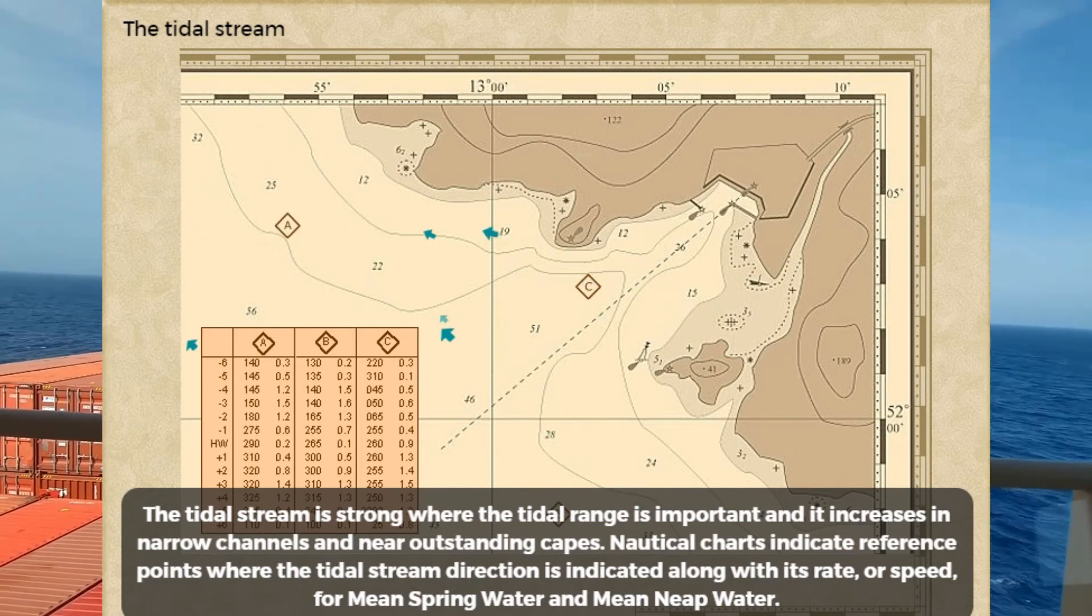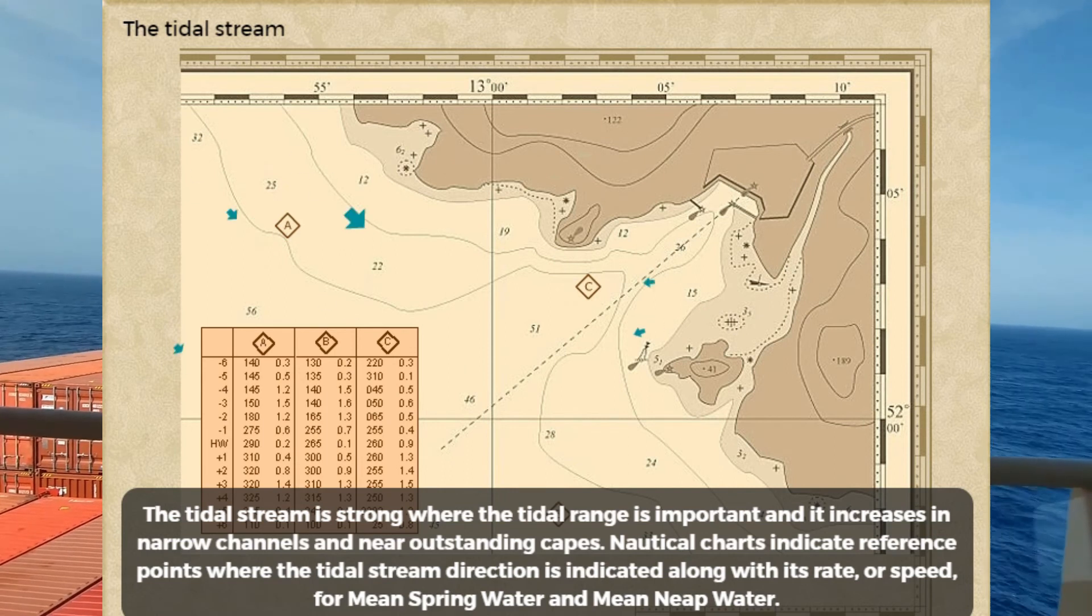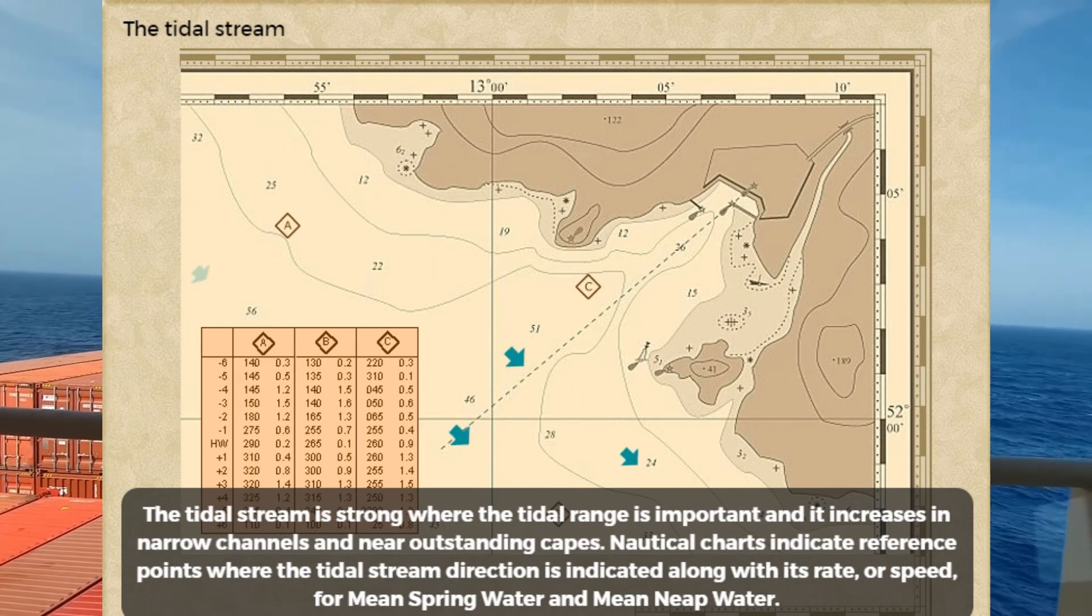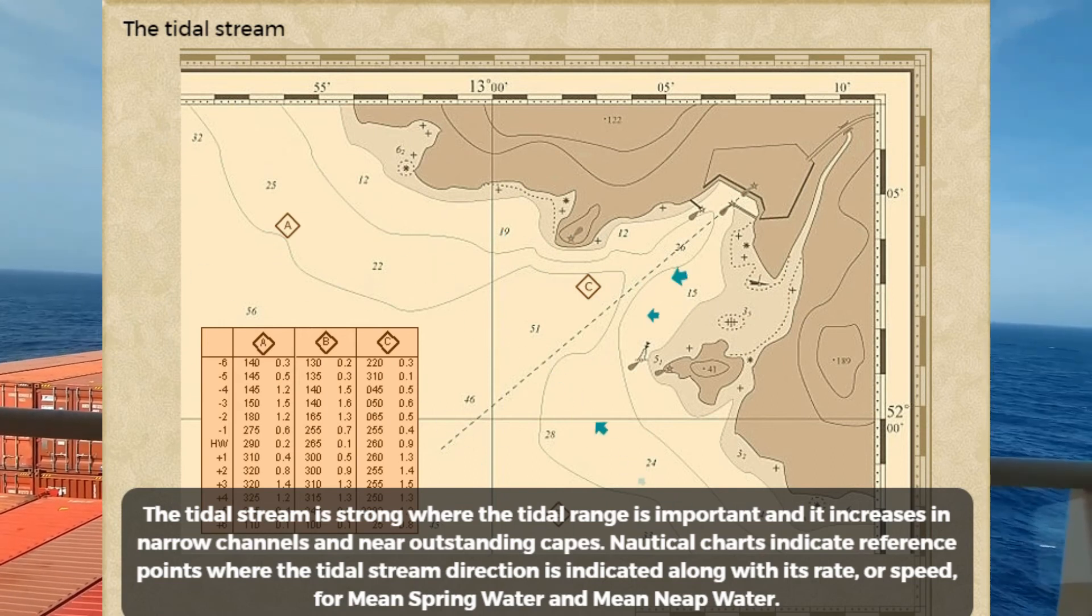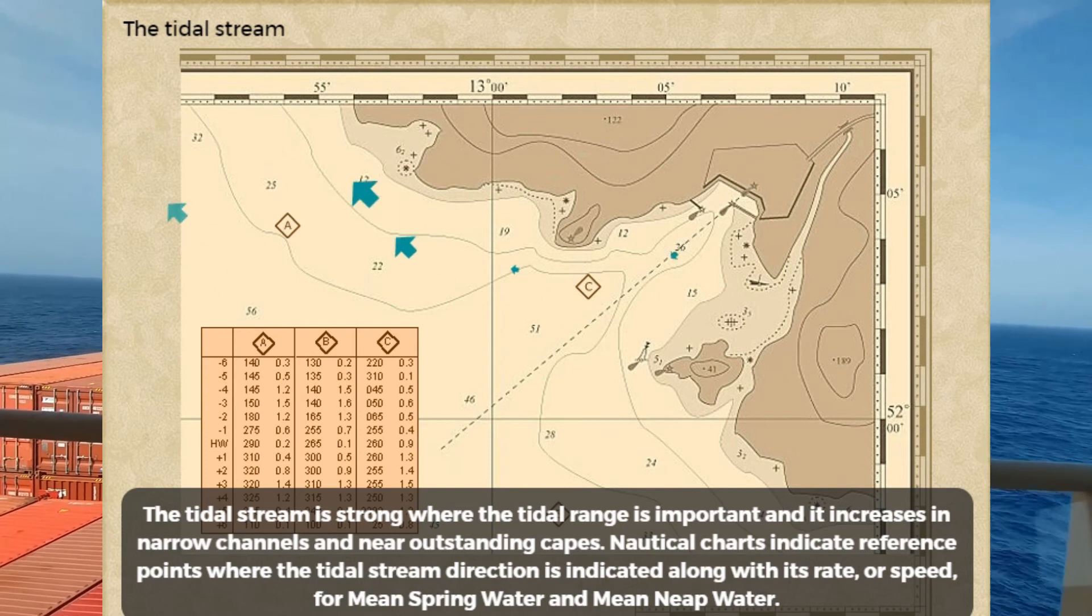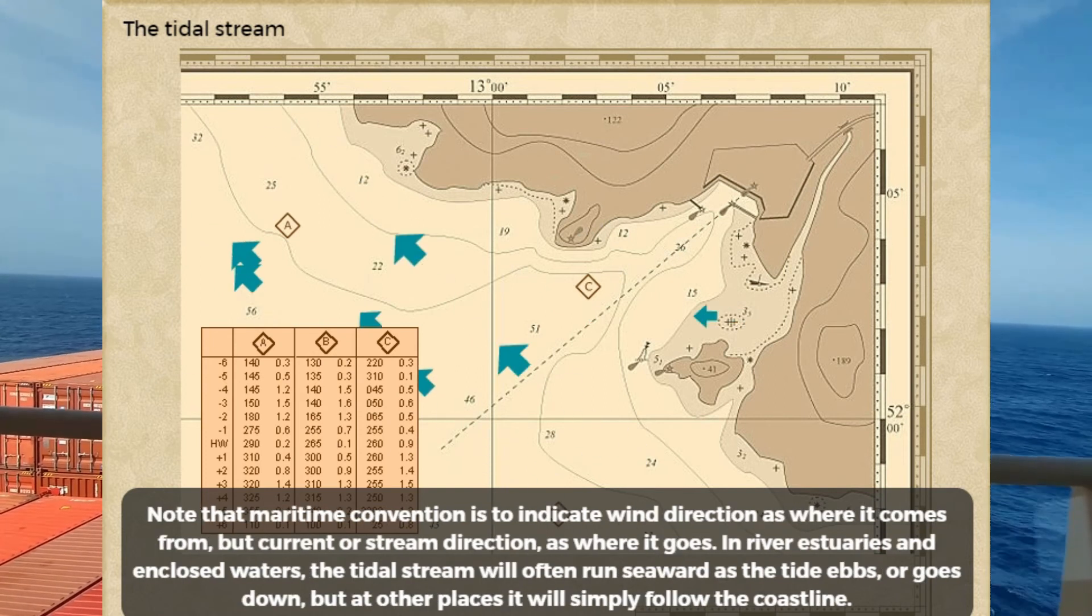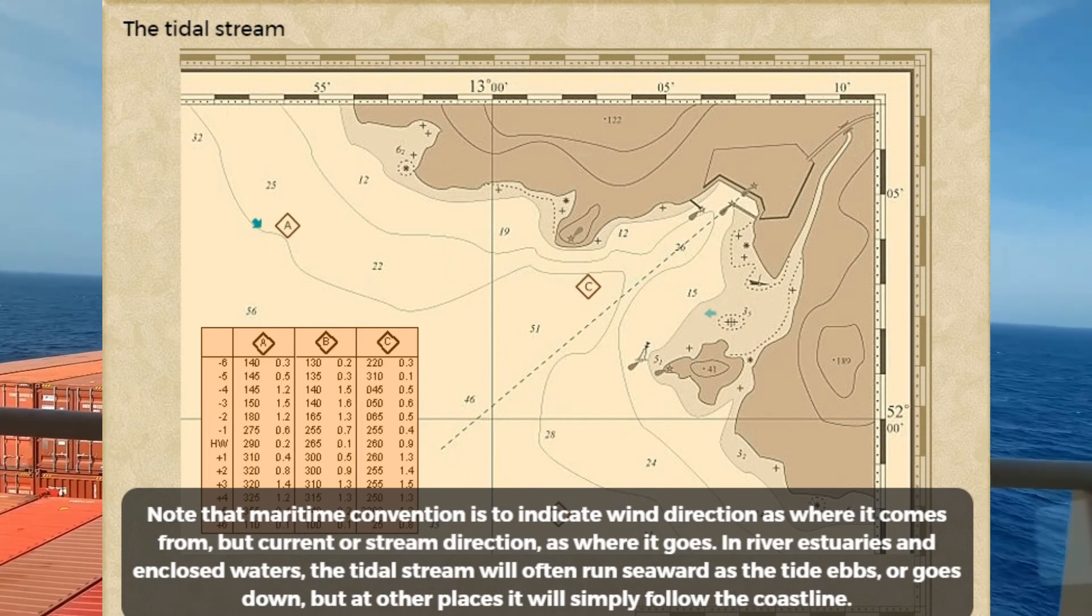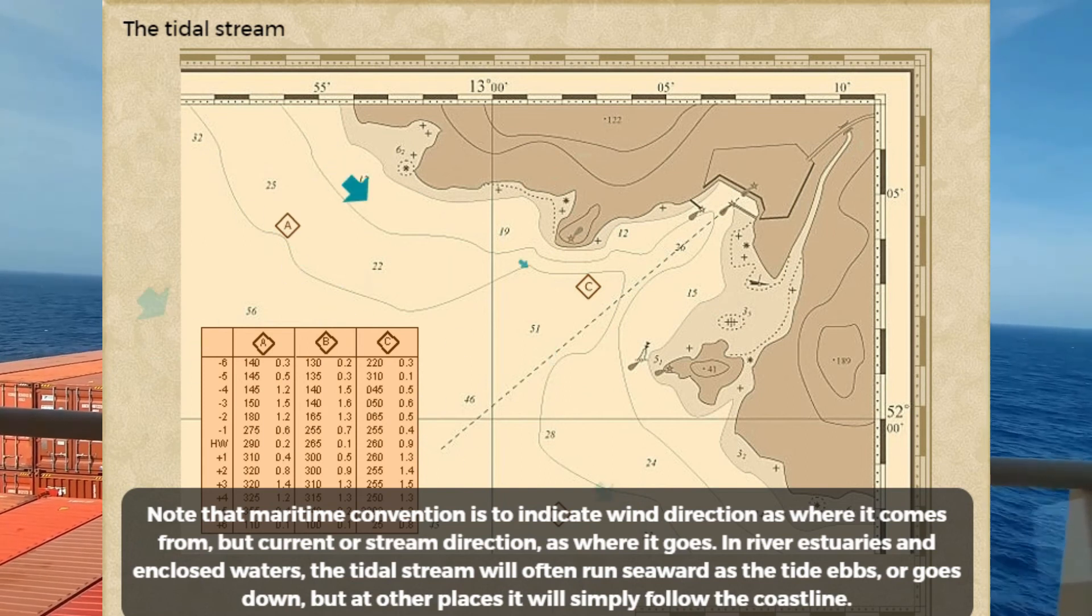Nautical charts indicate reference points where the tidal stream set or direction is indicated together with its rate or speed for mean spring water and mean neap water. Note that maritime convention is to indicate wind direction as where it comes from, but current or stream direction as where it goes.